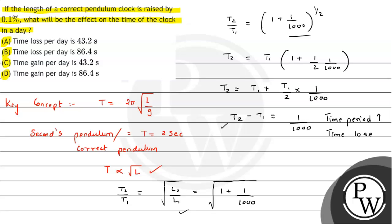Therefore, time loss in a day will be equals to 1/1000 times 24 times 3600 divided by 2. Because it is time loss in two seconds, since the time period of correct pendulum is 2 seconds. One by thousand second is lost in two seconds. So in a day - that is 24 hours and 3600 seconds - we have to divide it with two to get the total time loss in a day.